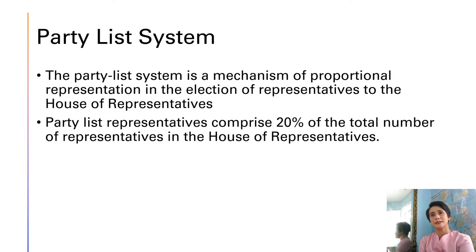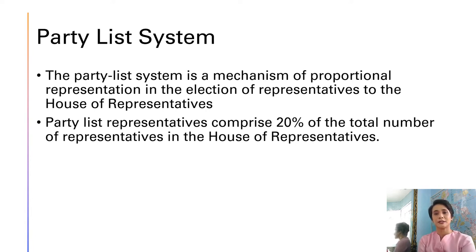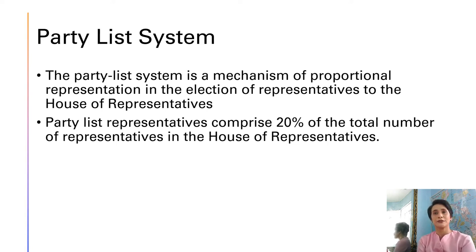The party list system is a mechanism of proportional representation in the election of representatives to the House of Representatives. Party list representatives comprise 20% of the total number of representatives in the House. With 250 members of the House of Representatives, 20% means there is a maximum of 50 seats available for party list representatives.